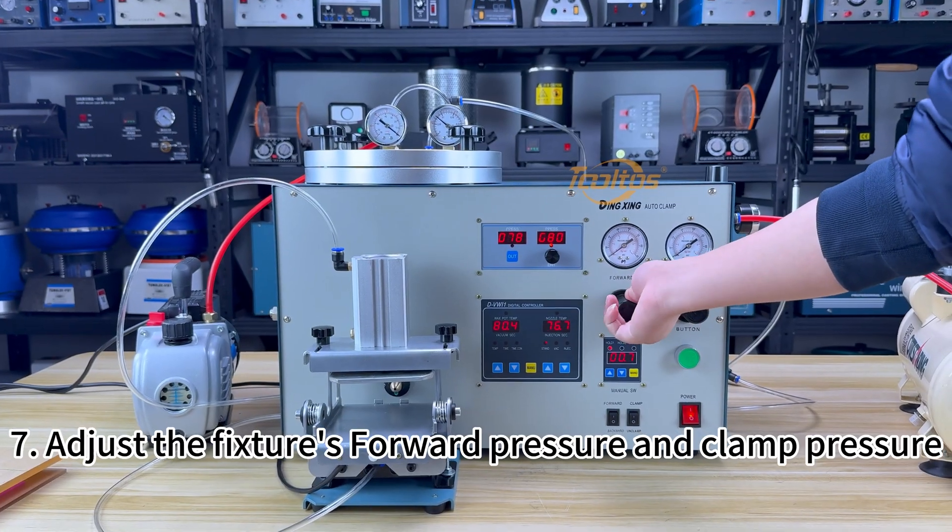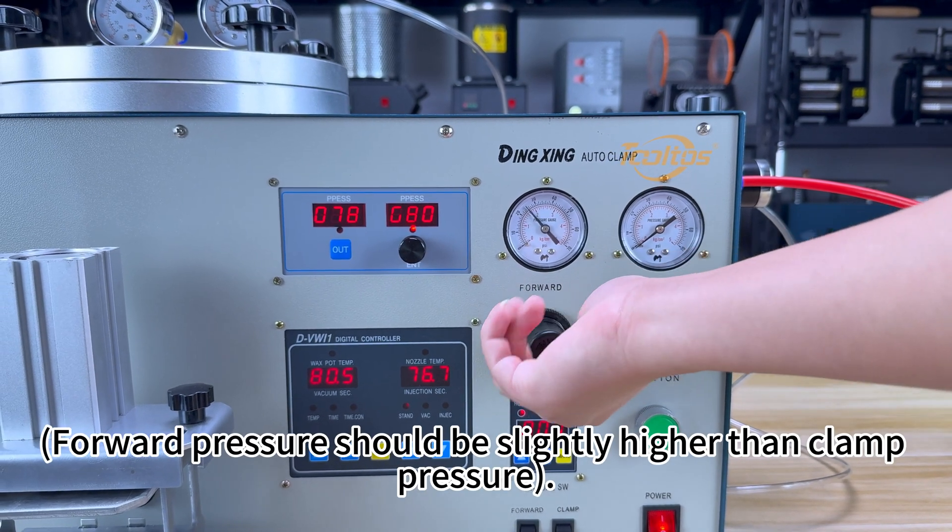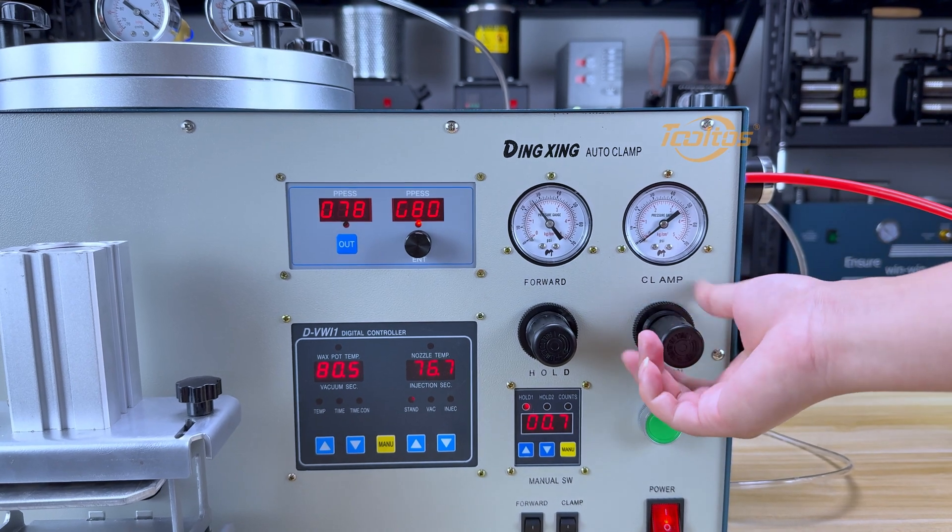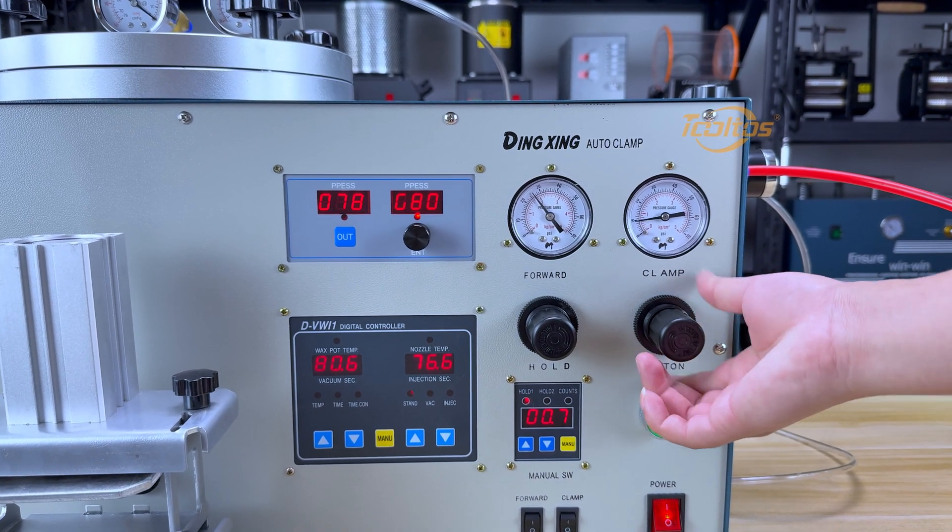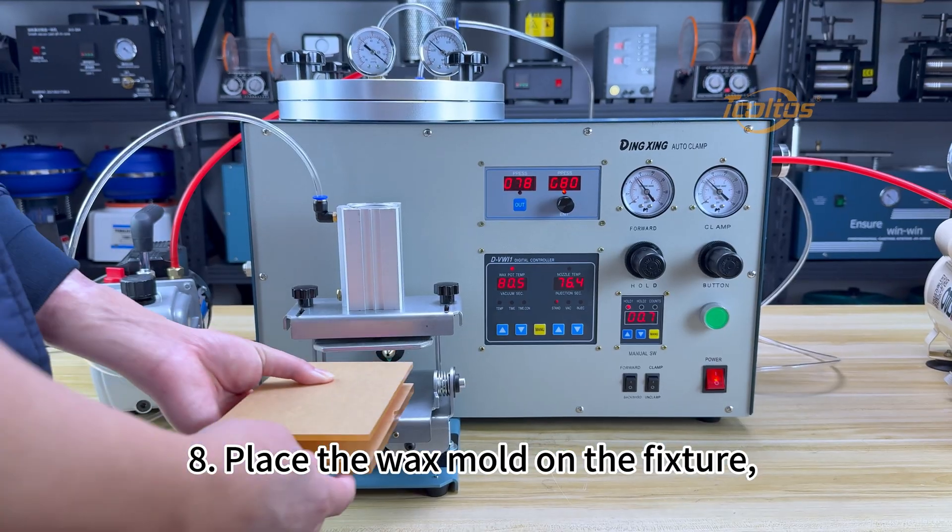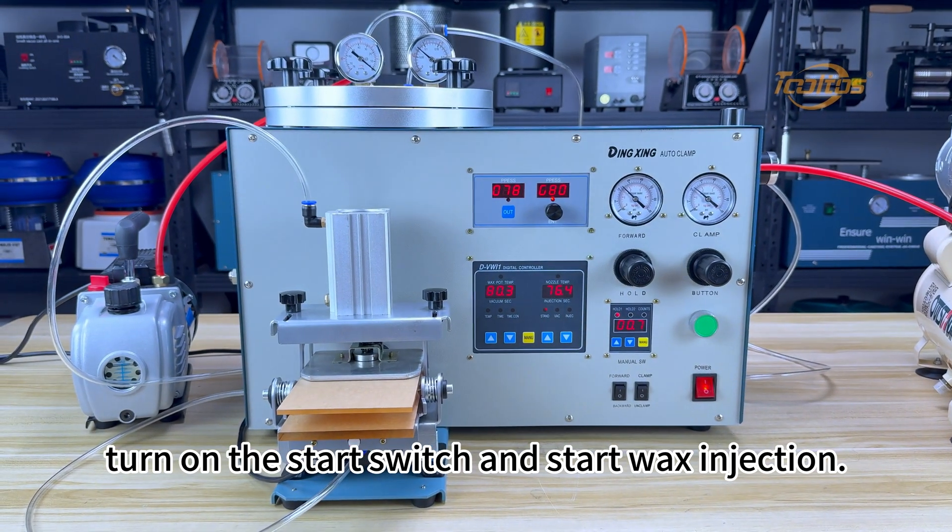7. Adjust the fixture's forward pressure and clamp pressure. Forward pressure should be slightly higher than clamp pressure. 8. Place the wax mold on the fixture, turn on the start switch, and start wax injection.